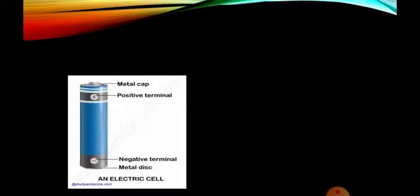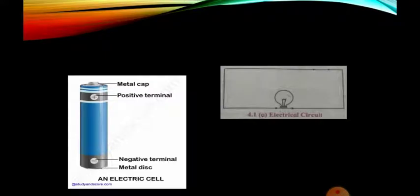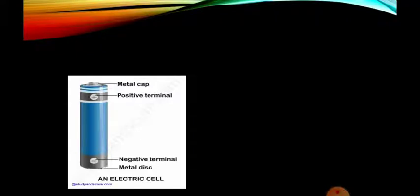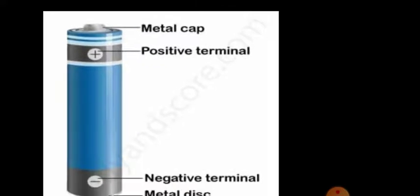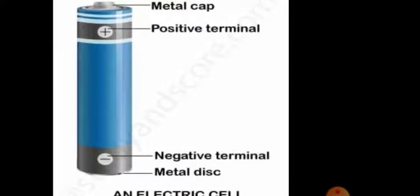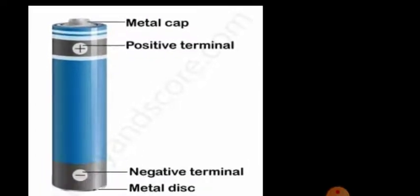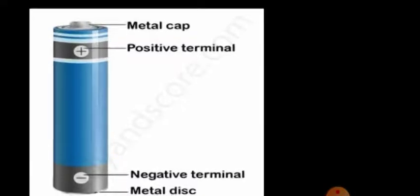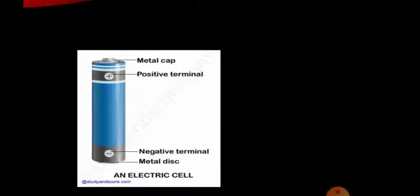Now, how is this potential given to the conductor? It is given by electromotive force, or a device called a cell. A cell has two terminals: one is the positive terminal, which is at a higher potential, and the other is the negative terminal, which is at a lower potential. The difference between the two levels is called potential difference.